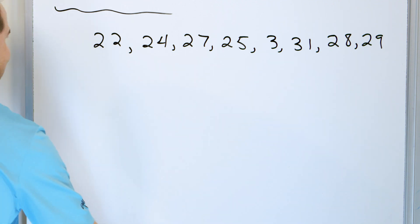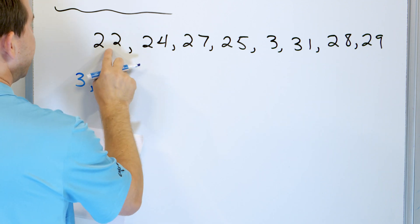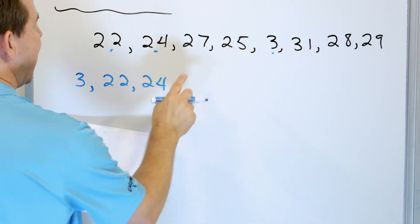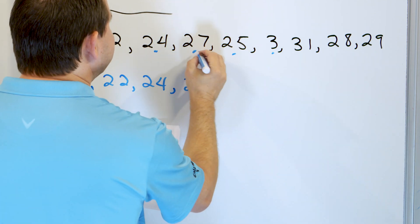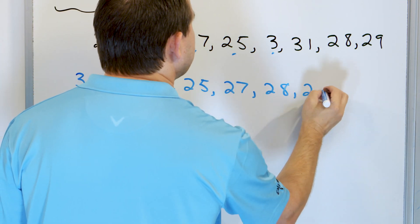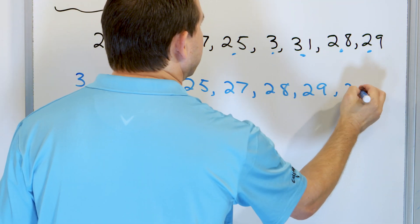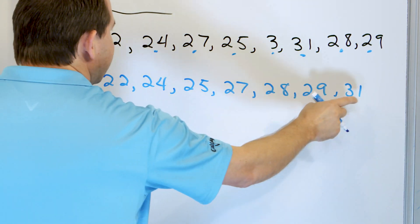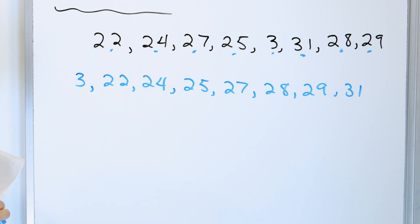The smallest number is a three. Then we have 22, 24, 25, 27, 28, 29, and 31. So our ordered data set is: 3, 22, 24, 25, 27, 28, 29, 31.